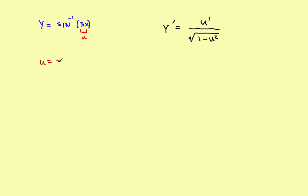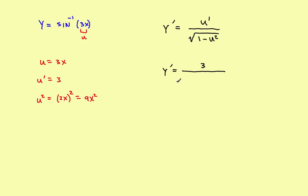Let u equal 3x. Then u prime is the derivative of 3x, which is 3. And u squared — squaring 3x — gives 9x squared. Now it's just a matter of plugging them into the formula. So y prime equals u prime over the square root of 1 minus u squared, which is 3 over the square root of 1 minus 9x squared. Some of these are pretty easy; it's really just a matter of plugging them into the formula.